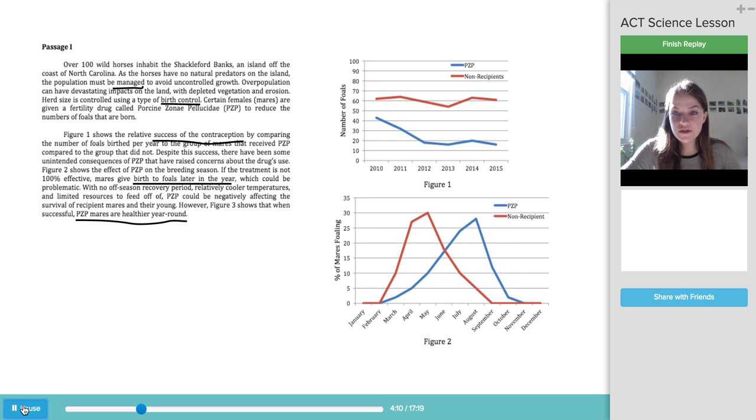So figure two, moving on. Here we have percent of mares foaling over just the months of the year. So this is the breeding season. Again, non-recipients in red here. So those are the female horses that didn't receive the birth control. They seem to peak and have their most foals around April, May. Those that receive the drugs seem to have, the majority of those mares seem to have foals, if they do have foals, later in the year, so around August.